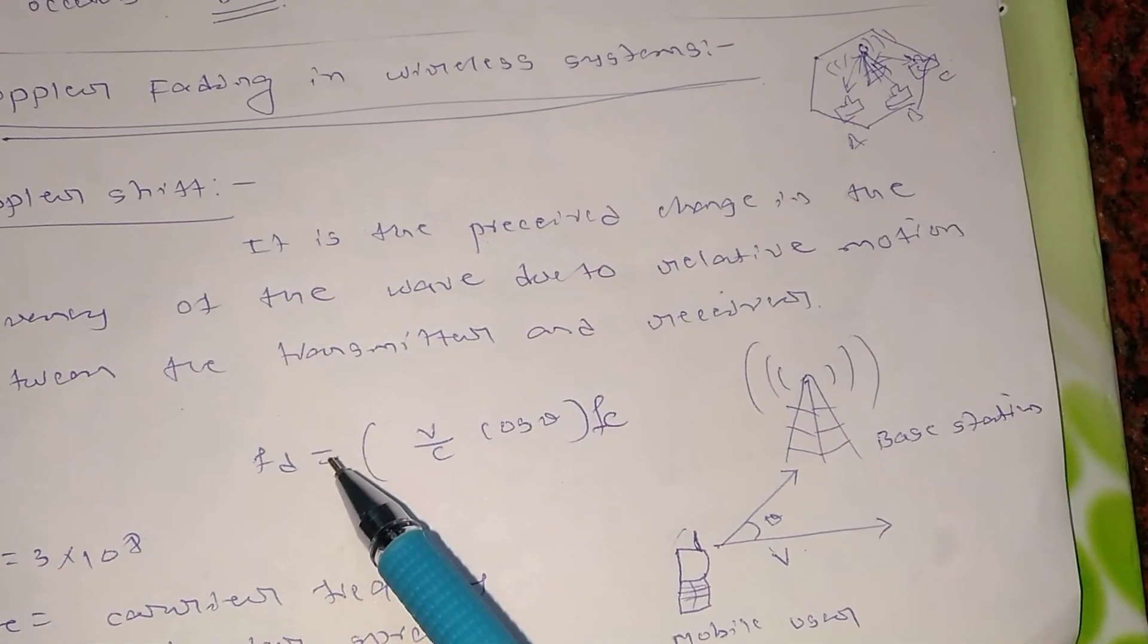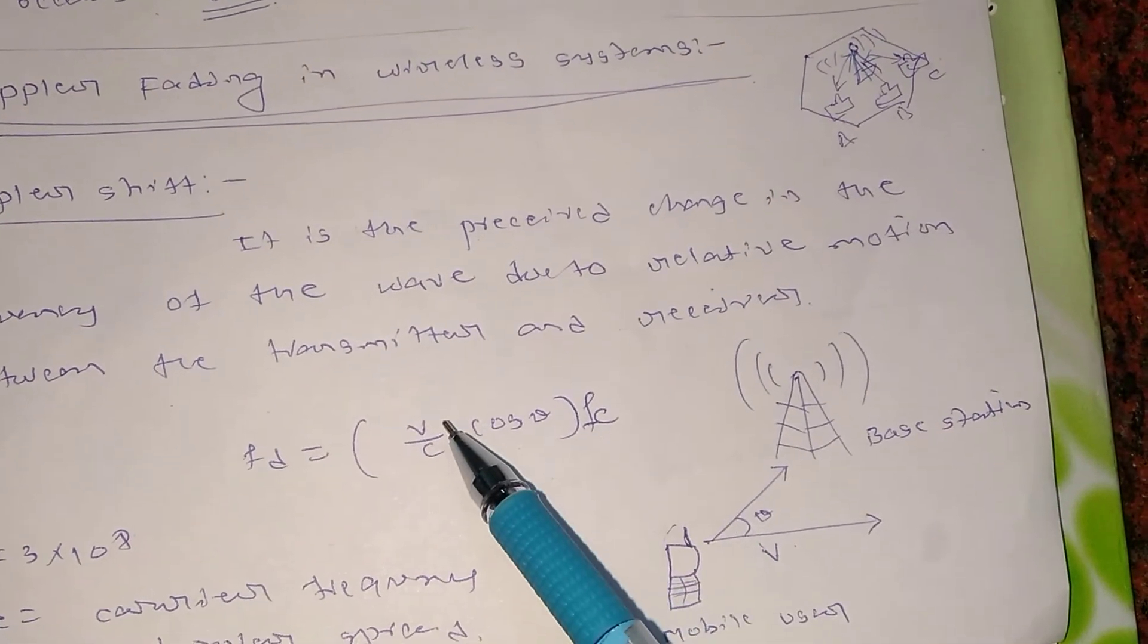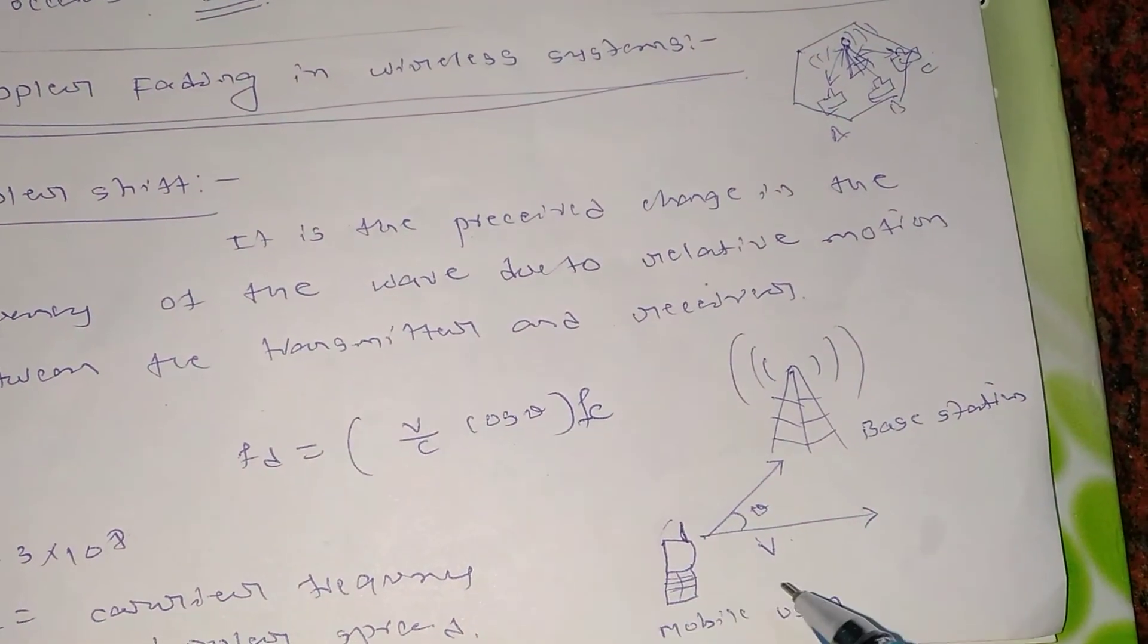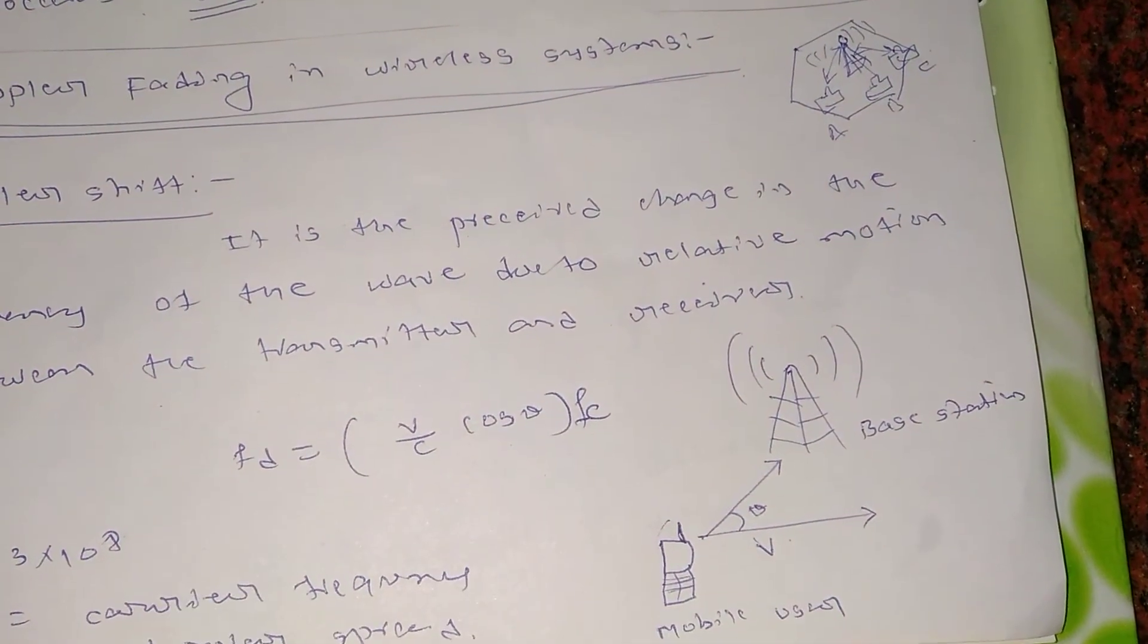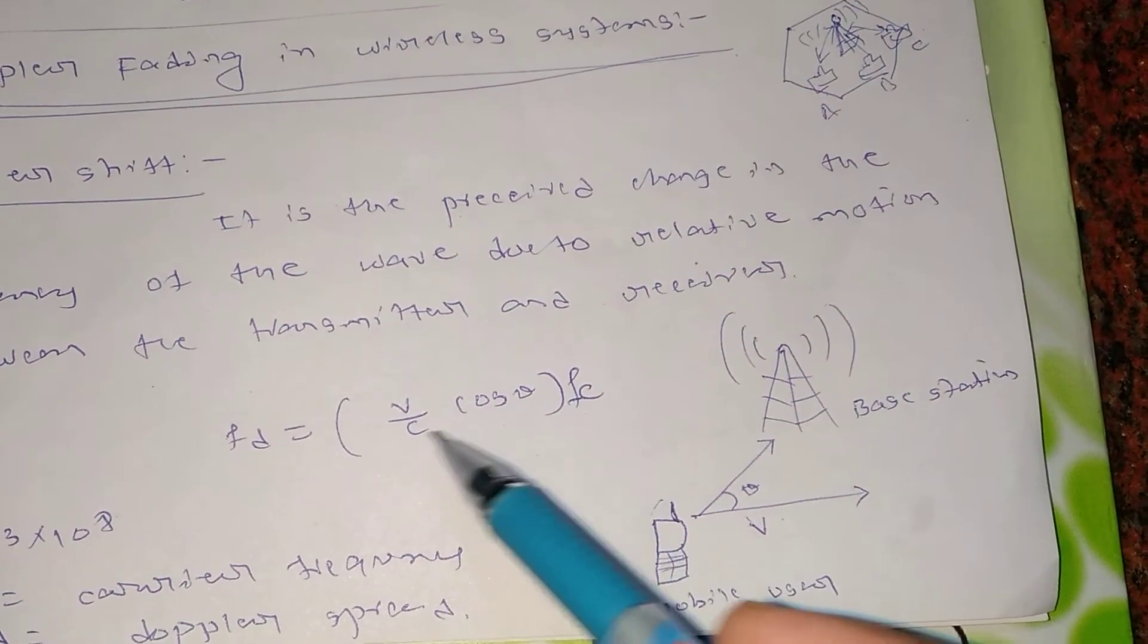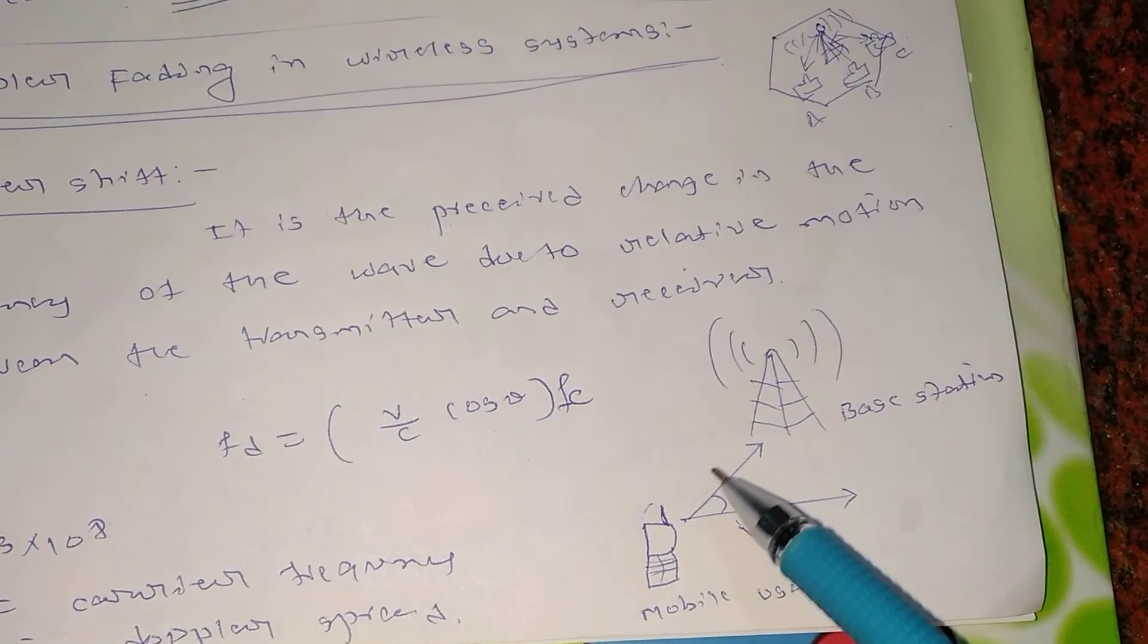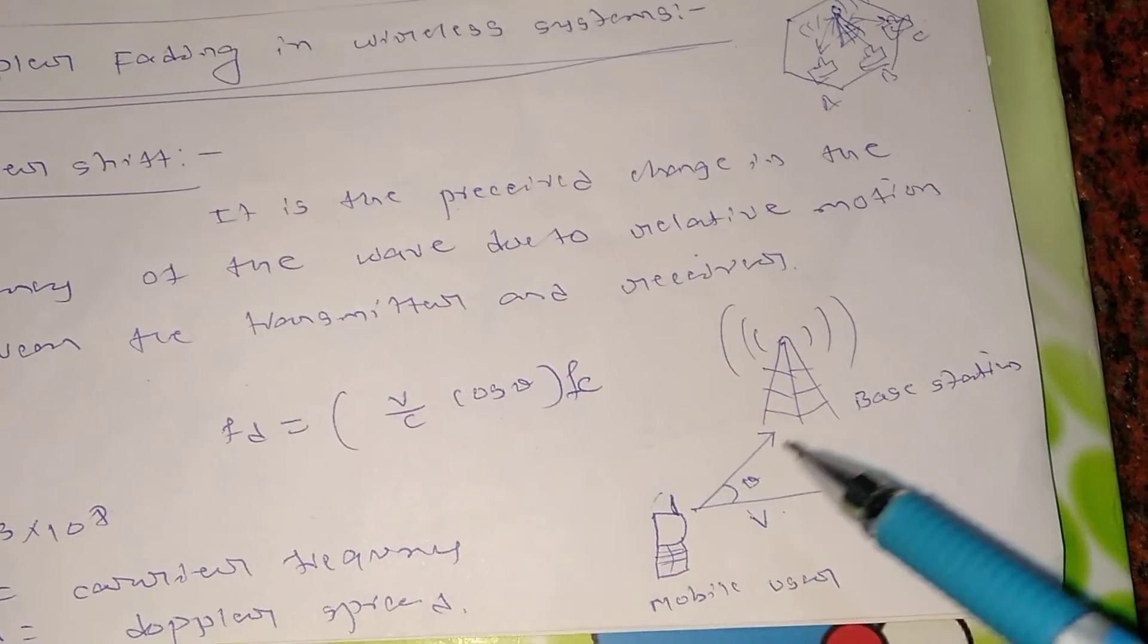It is denoted as fd which will be equal to (v/c cos theta) times fc, where v stands for velocity of the mobile user, c stands for speed of light 3 times 10 to the power 8 meter per second, theta is the angle between these two lines you can see here, and fc is the carrier frequency which is used to make communication between transmitter and this mobile user.